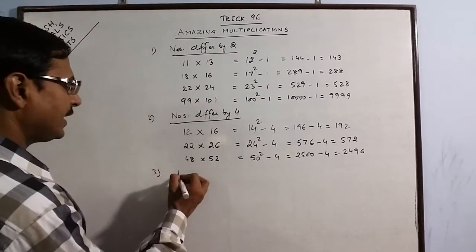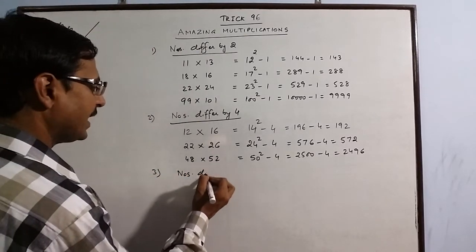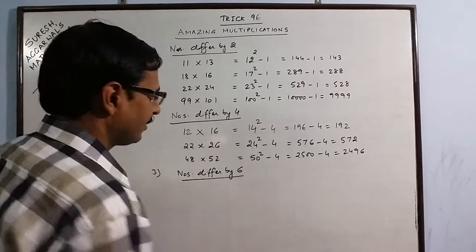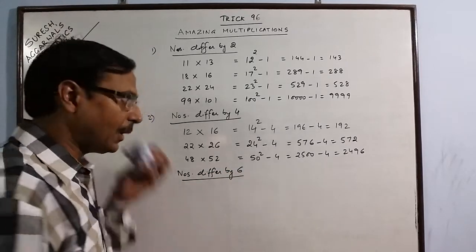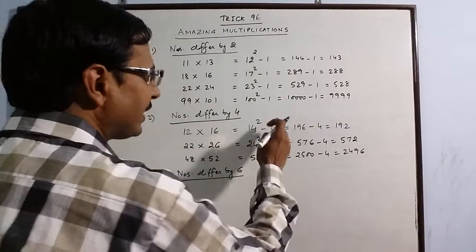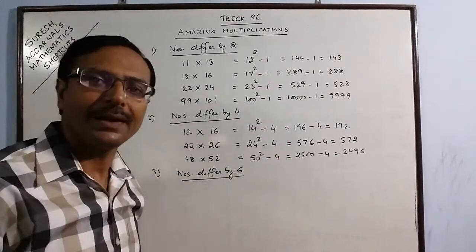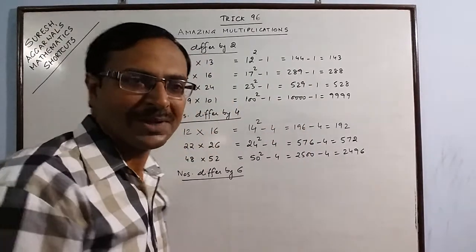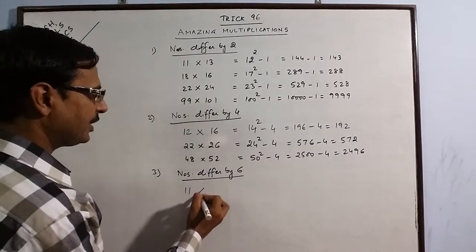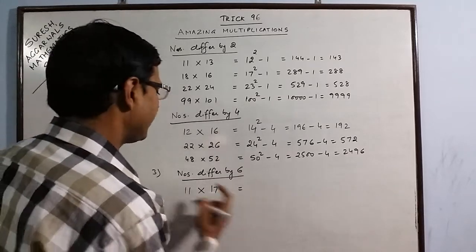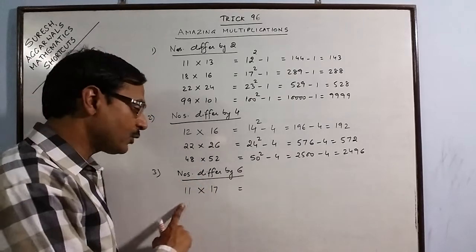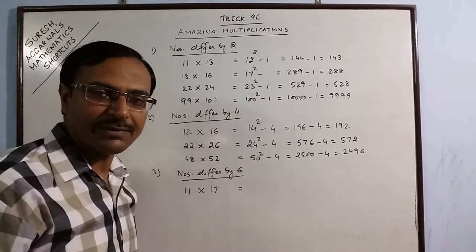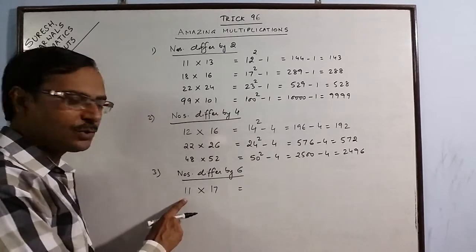Likewise, you can take the difference of numbers as 6. When the numbers differ by 6, now instead of 1 and 4, just subtract 9. 1 square is 1, 2 square is 4, now 3 square is 9. So if you have 11 into 17, just check the intermediate number. If you fail to find the intermediate number, how much is the difference? 6. What is the half of 6? 3. Just add 3 to this.